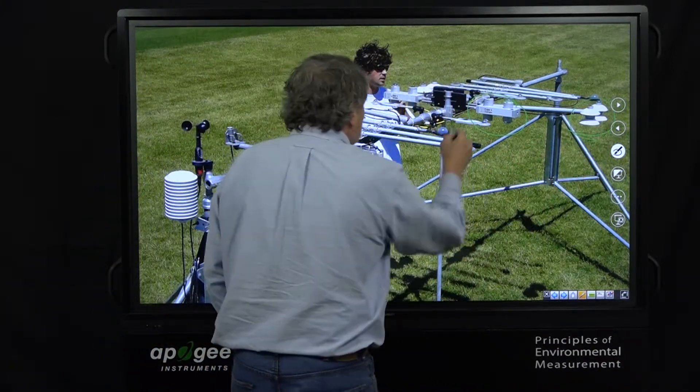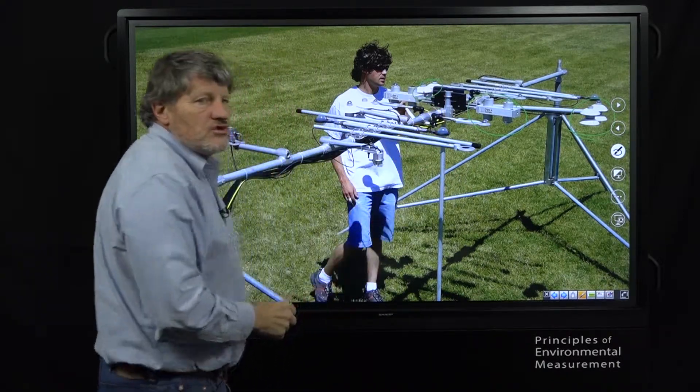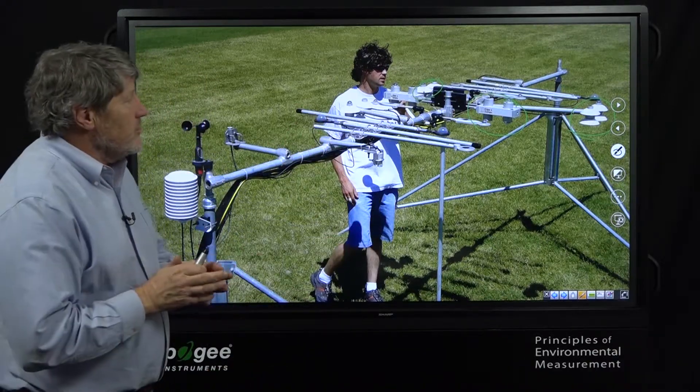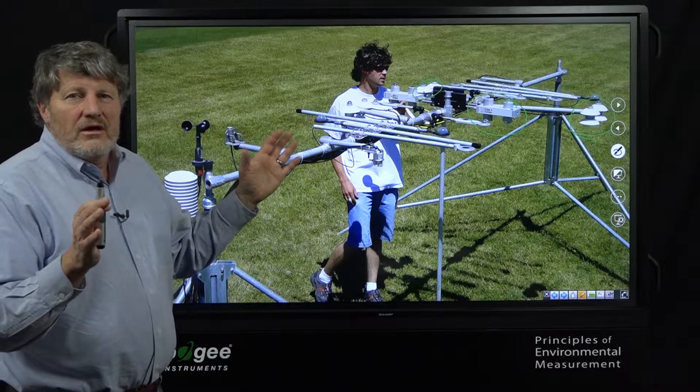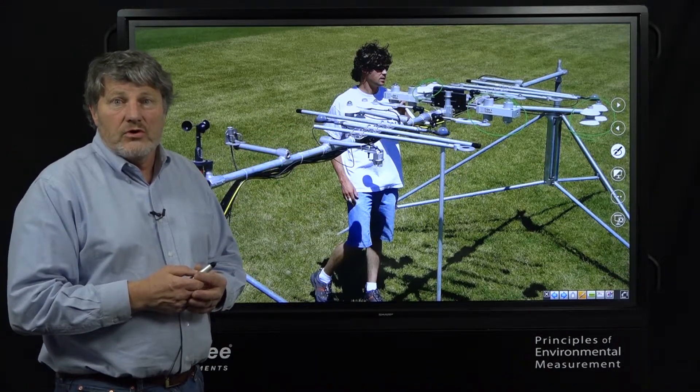If we look hard in here you can see triplicates of all these sensors on this mast. We ran this all summer long, collected an enormous body of research and concluded if we're going to do a good job in net radiation we need a four component instrument.